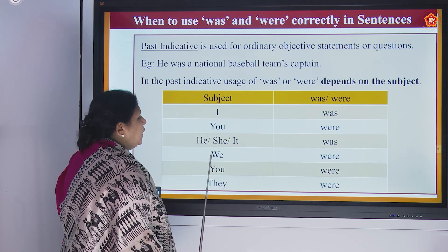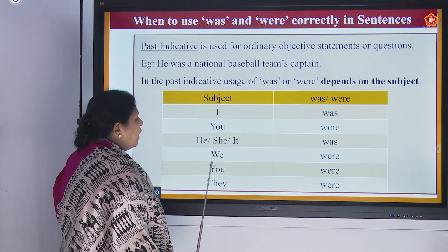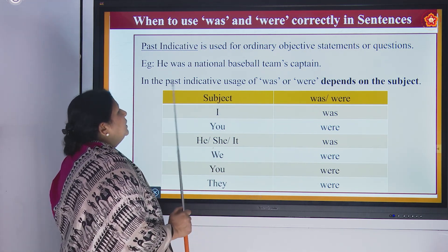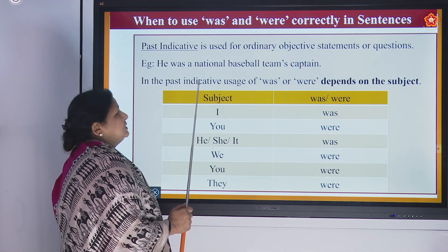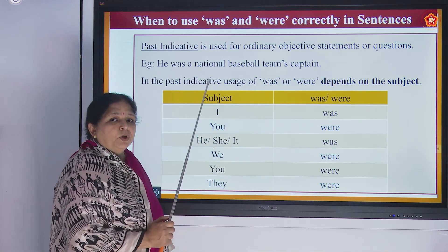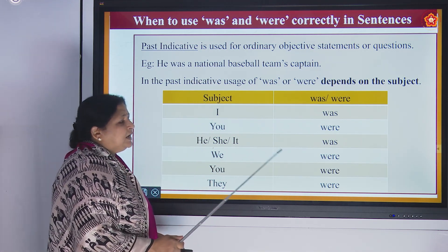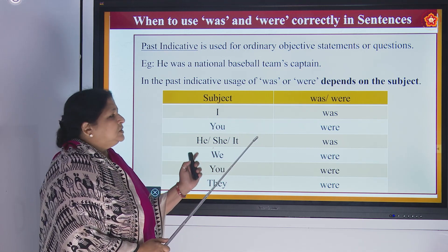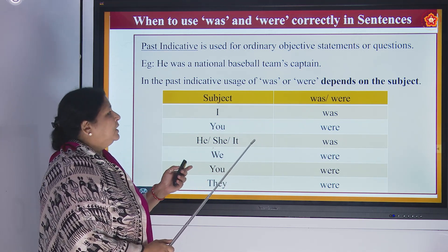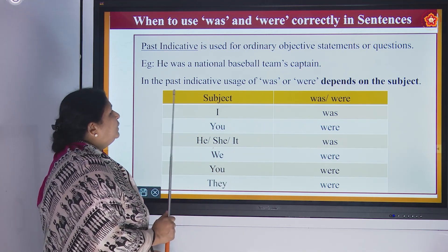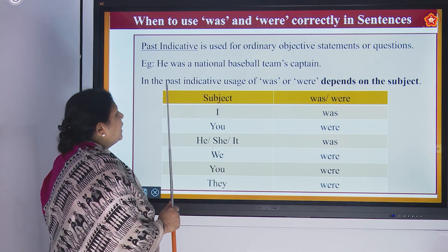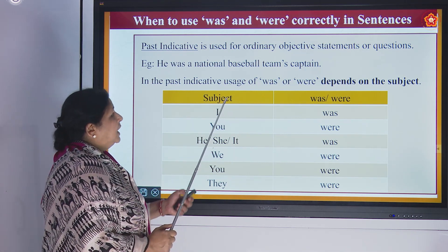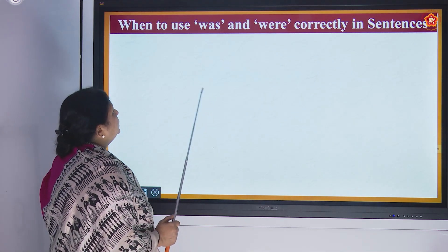For 'we', 'you', and 'they', use were in the past indicative. Write down this table as it is easy reference and you will never make a mistake. Don't forget to write 'past indicative' — that is very important.